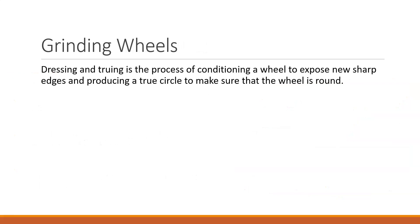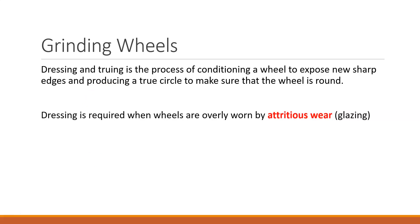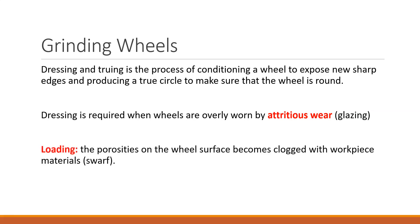As the wheel wears down through these three mechanisms, you lose sharp edges from attritious wear and can also affect the wheel's shape and shot size. This leads to the concept of dressing the wheel. Dressing addresses attritious wear where crystals or grit have been worn smooth, but also addresses loading. Loading is different from wear — it occurs when swarf clogs the porosity of the wheel.